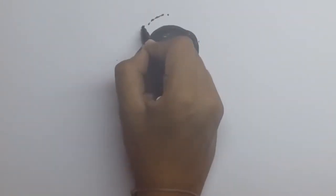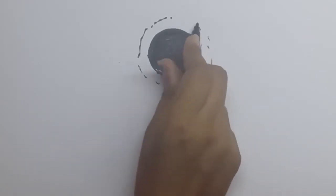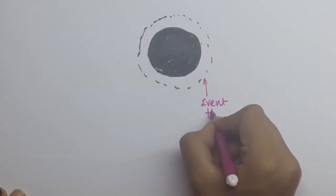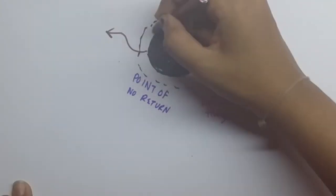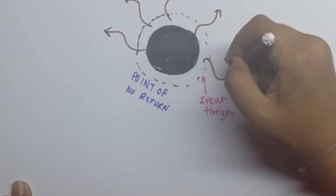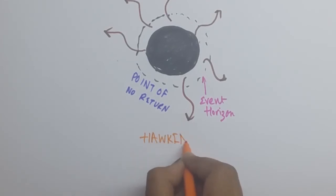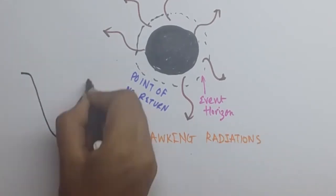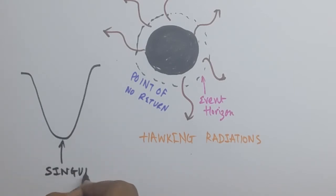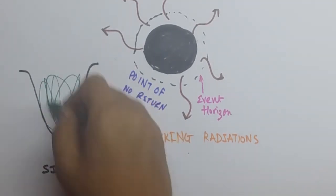A black hole is always surrounded by an event horizon, which is popularly known as the point of no return, since light cannot come back from this point. Black holes are always emitting Hawking radiation, named after Stephen Hawking. These are electromagnetic radiations at the event horizon.